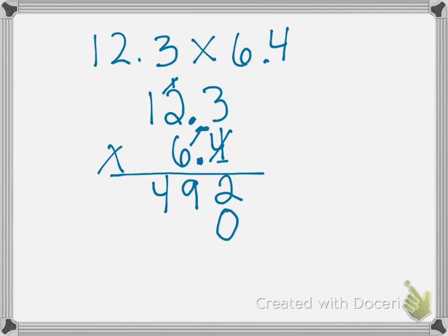6 times 3 is 18. 6 times 2 is 12 plus the 1 is 13. 6 times 1 is 6 plus the 1 is 7. Don't bring the decimals down and put them there. That's not how we do this. You ignore the decimals right now until you're all the way done with the multiplication problem. So now we're going to add.